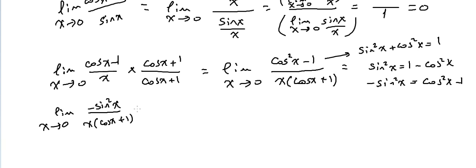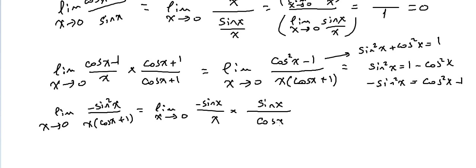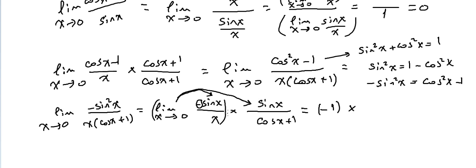This simplifies to the limit of −sin(x)/x times sin(x)/(cos(x) + 1) as x approaches 0. The limit of sin(x)/x equals 1, so we have minus 1 times the limit of sin(x)/(cos(x) + 1). Distributing the limit: sin(0) = 0 in the numerator, and cos(0) + 1 = 2 in the denominator. So that factor is 0/2 = 0. The final answer is minus 1 times 0 equals 0.